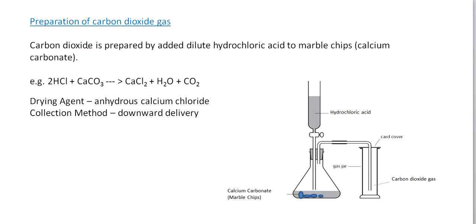How do we prepare carbon dioxide gas? Carbon dioxide is prepared by adding dilute hydrochloric acid to marble chips — that is, calcium carbonate. We have calcium carbonate in a flask and we add hydrochloric acid. The equation is: HCl + CaCO3 → CaCl2 + H2O + CO2. As you may remember, an acid plus a carbonate produces a salt, water, and carbon dioxide.